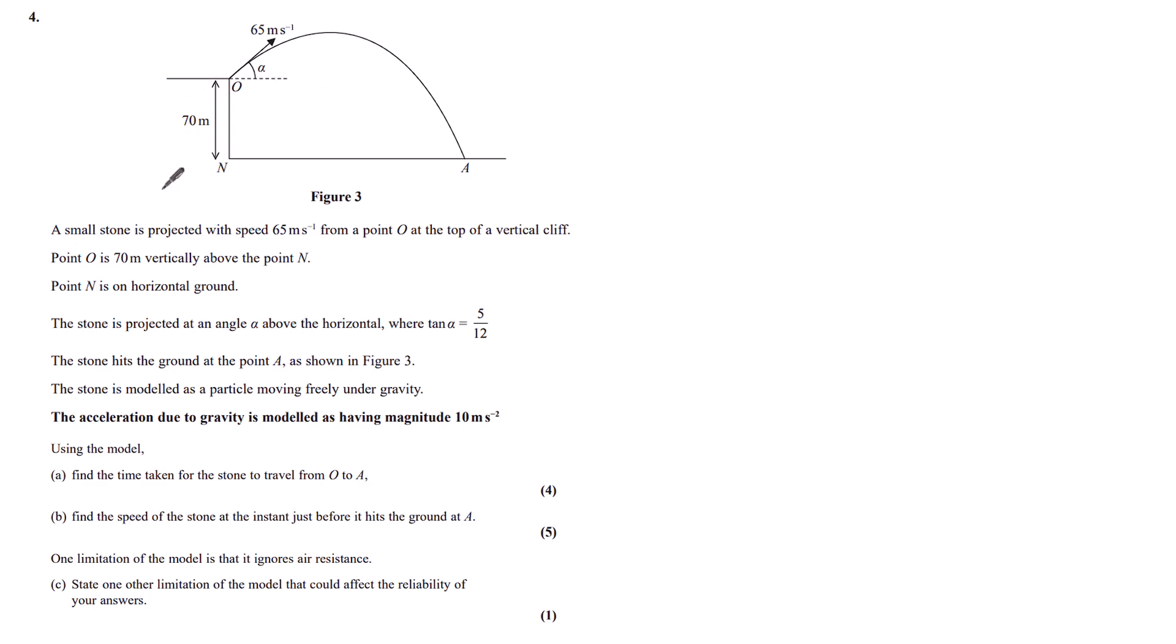Question 4. A small stone is projected with speed 65 meters per second from a point O at the top of a vertical cliff. Point O is 70 meters vertically above the point N. Point N is on horizontal ground. The stone is projected at an angle of alpha above the horizontal, where tan alpha is equal to 5 twelfths. The stone hits the ground at the point A. As shown in Figure 3, the stone is modeled as a particle moving freely under gravity. The acceleration due to gravity is modeled as having a magnitude of 10 meters per second squared.